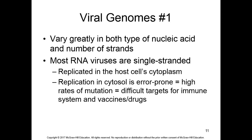Viral genomes vary greatly in both types of nucleic acid. In animals, our genome is always DNA. Most RNA viruses are single-stranded. They are replicated in the host cell's cytoplasm, and replication in the cytoplasm is error-prone, leading to high rates of mutation. This also makes it difficult to target with immune responses, vaccines, and drugs because you are effectively targeting the host cell machinery.